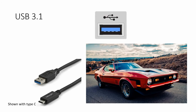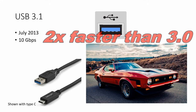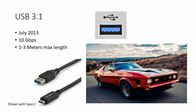Then we get into USB 3.1. The port looks blue but it's more of a teal blue color. I've got a cable here with the Type C connection. This came out in July 2013 and we're doubling speed up to 10 gigabit per second, with a maximum length of up to 3 meters, though typically closer to 1 meter in practice. They did reduce the line encoding, which allowed speeds to stay closer to that 10 gigabit per second.